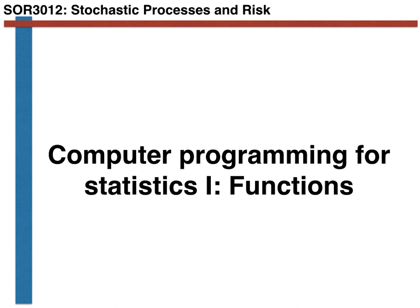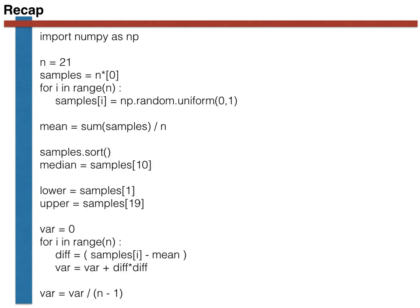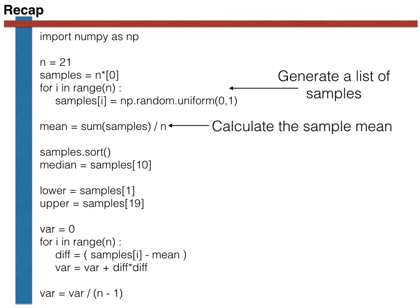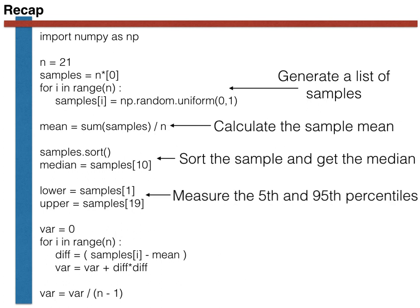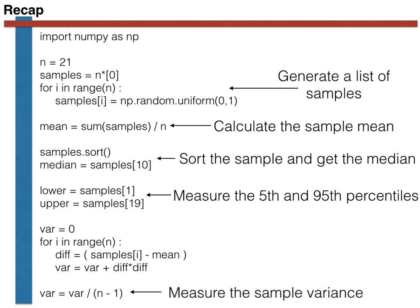In particular, you should now be able to write code something like the one shown here. This code generates a list containing n uniform random variables. It then computes the sample mean, the median, the 5th and 95th percentiles, and the sample variance for this sample of random variables.